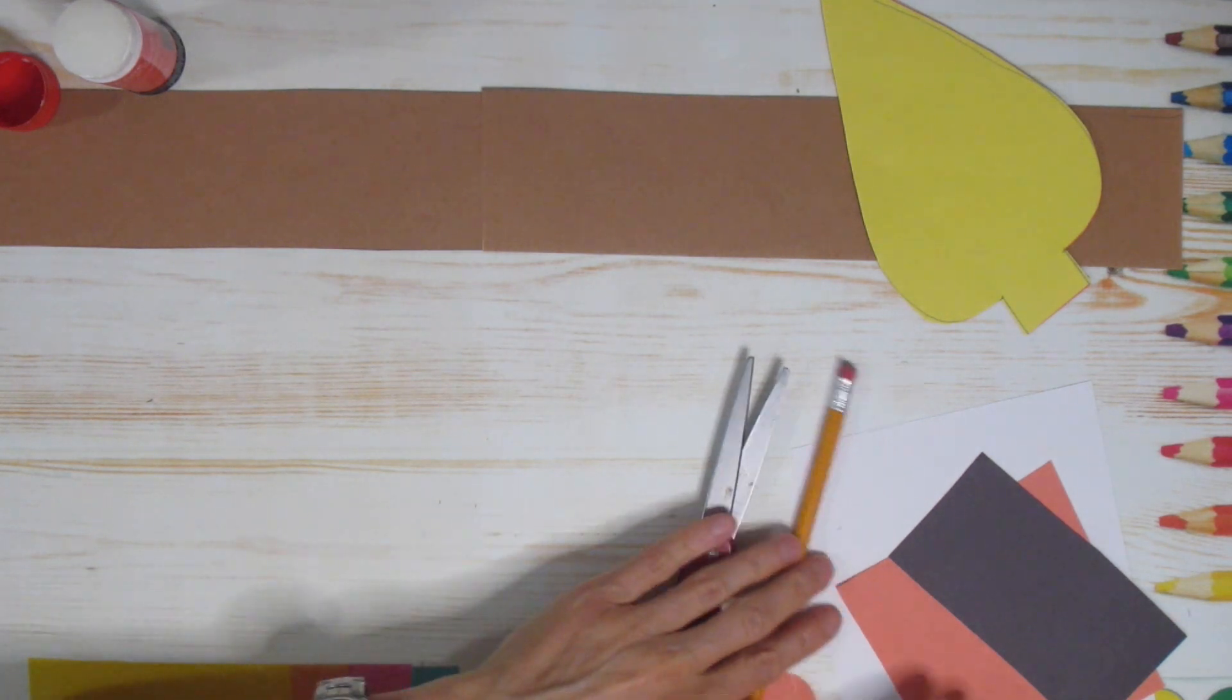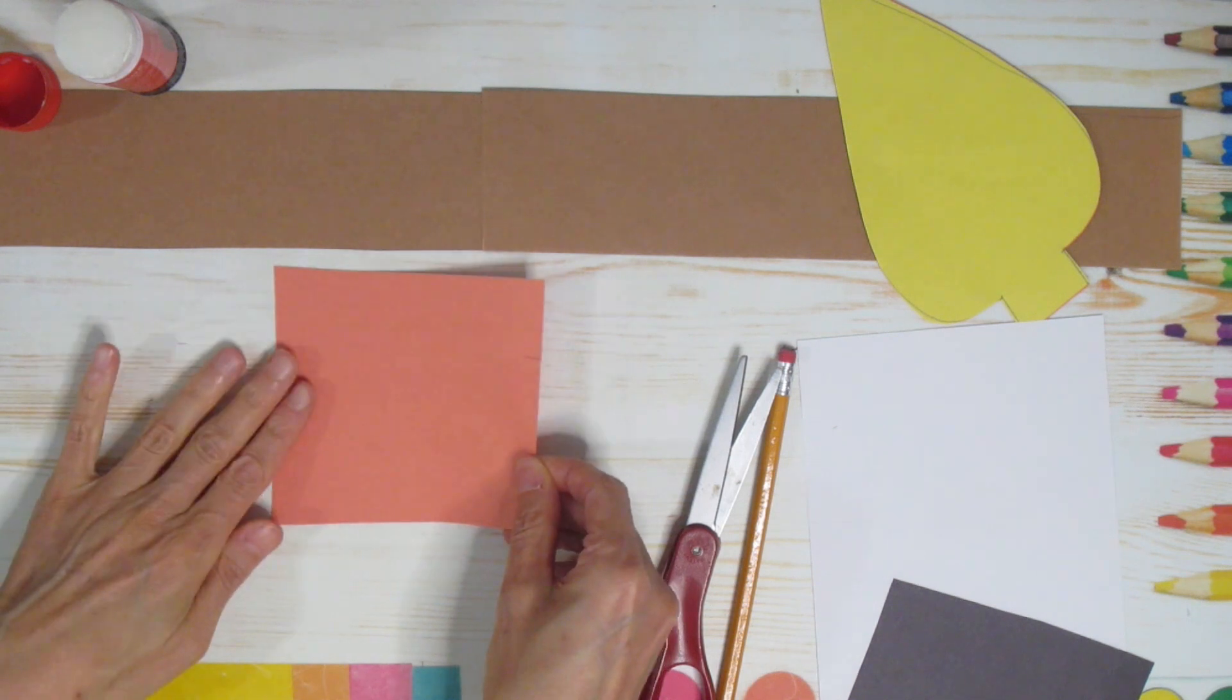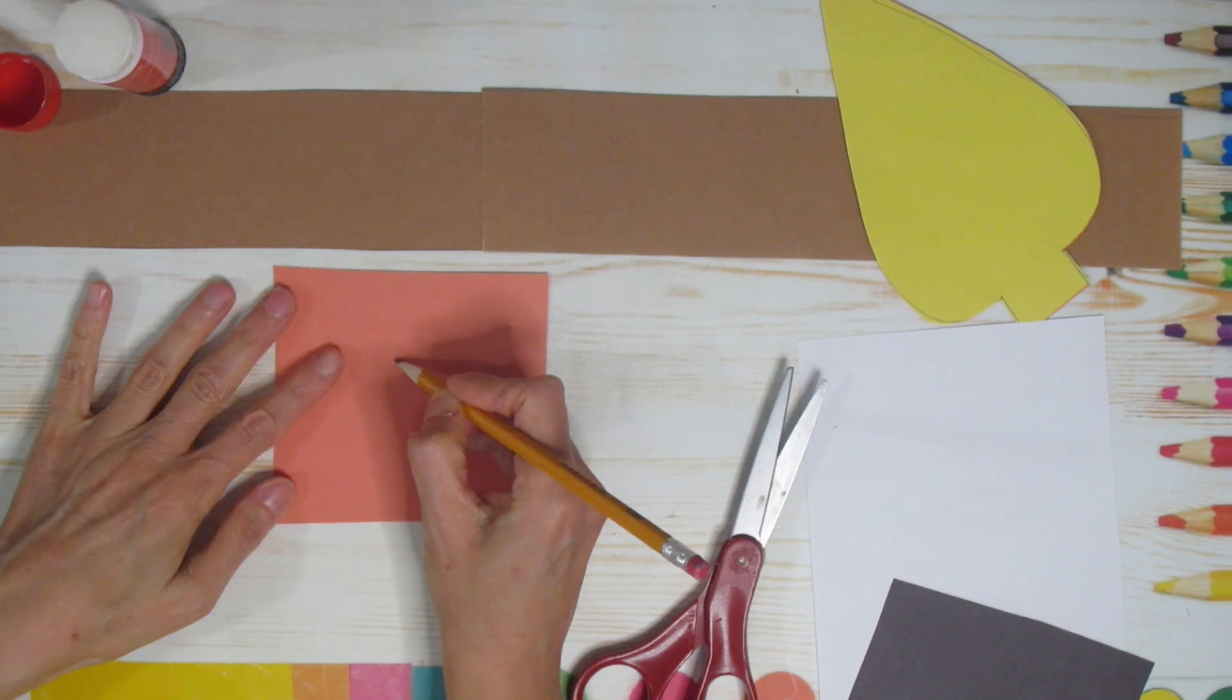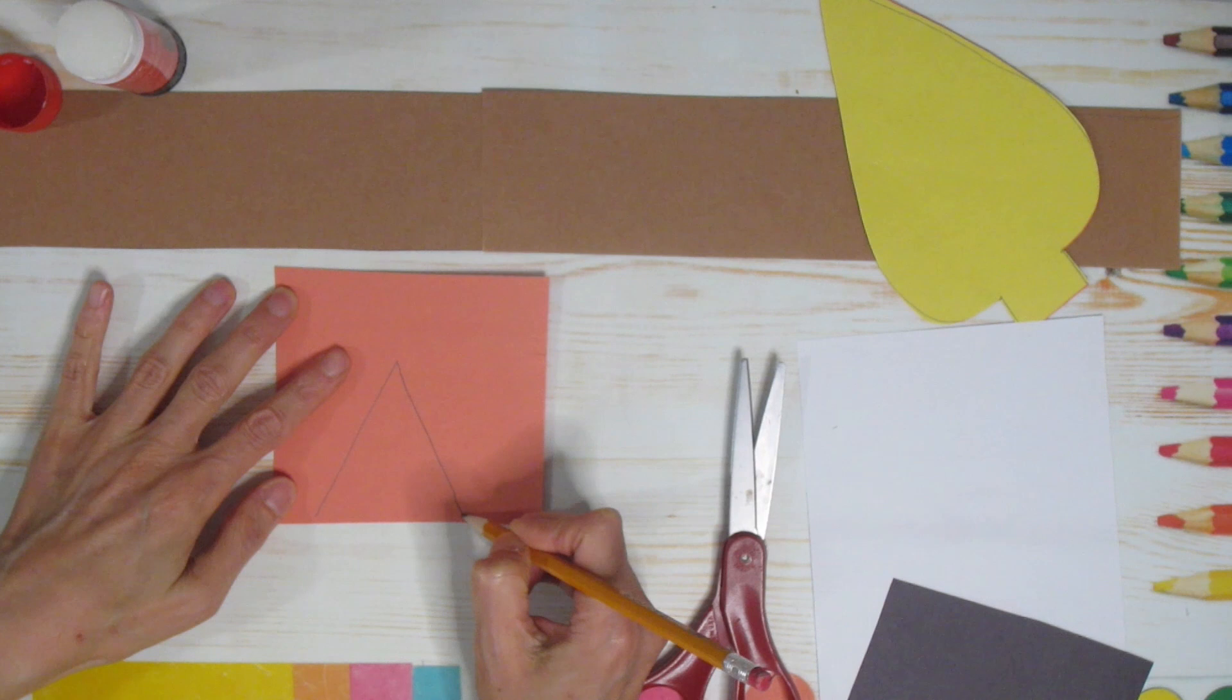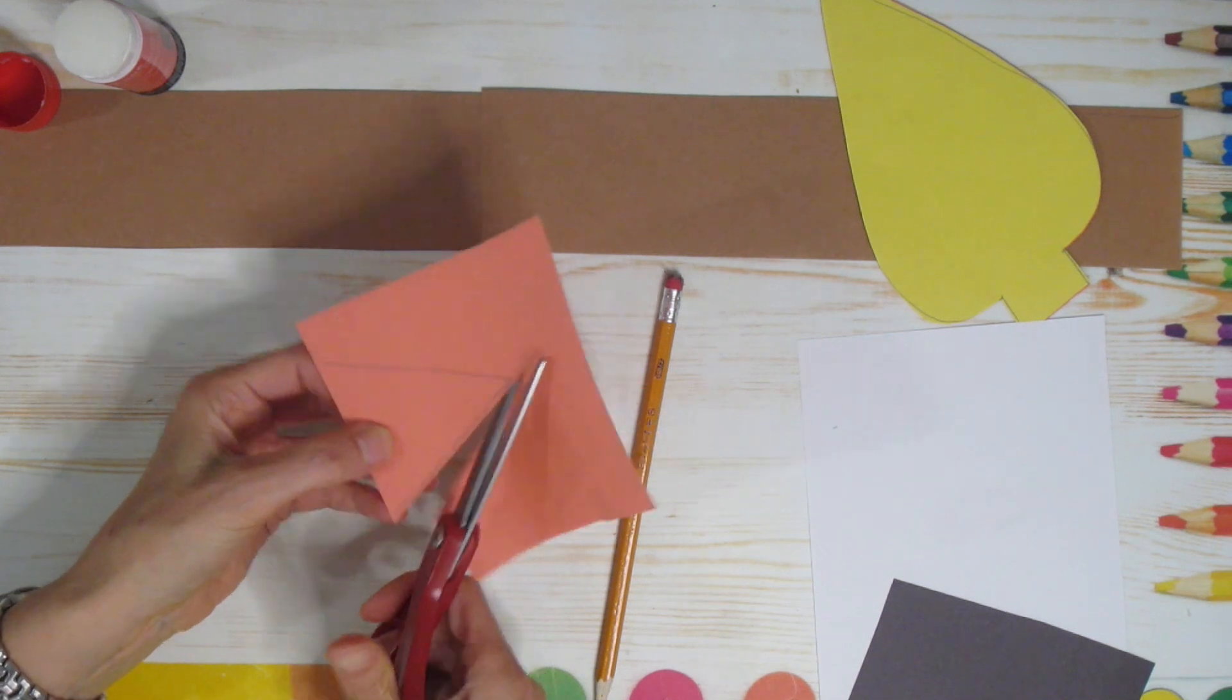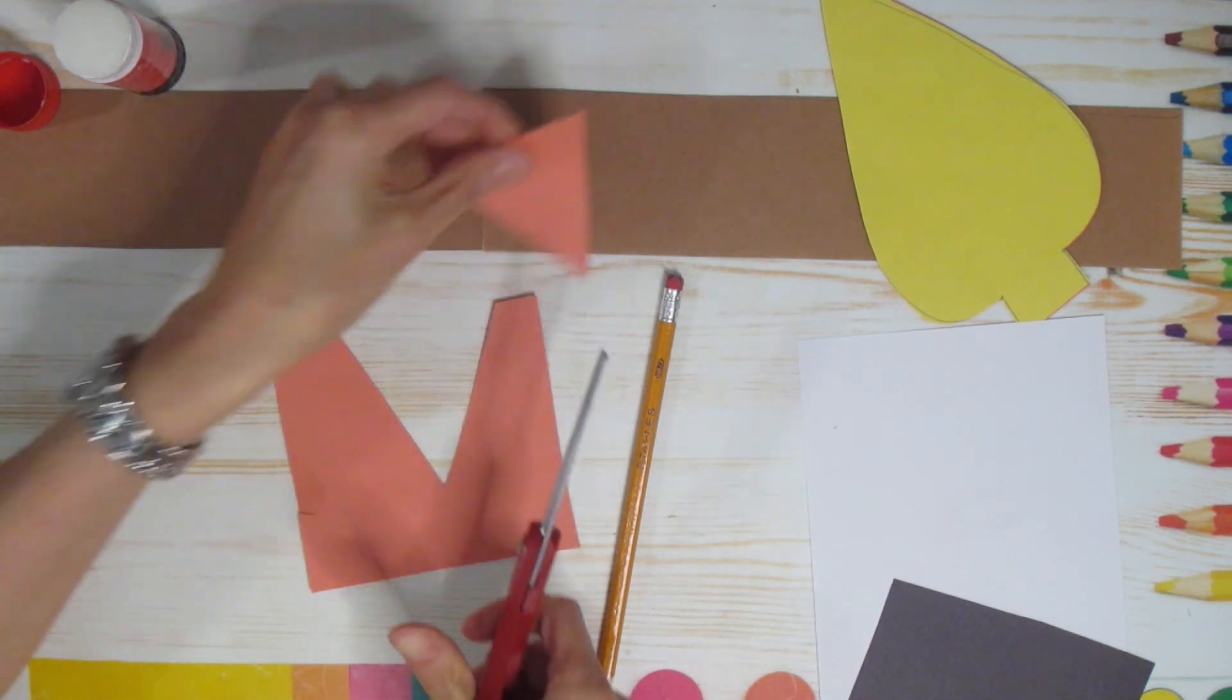We are going to take our orange piece of paper, and on that orange piece of paper, we are drawing our beak. So I'm just going to draw a triangle. I'm going to draw a diagonal line down, go back up to the top, draw another diagonal line down, and that is my beak. You can see it's pretty big. I'm drawing a pretty big beak. I'm going to cut that out and put that to the side.